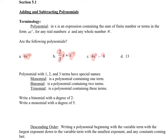This has one term, this has two terms. You have to notice in the definition: where 'a' is a real number and 'n' is a whole number. So let's look at these — 'n' is the exponent. Is that a whole number? No. So that is not a polynomial.